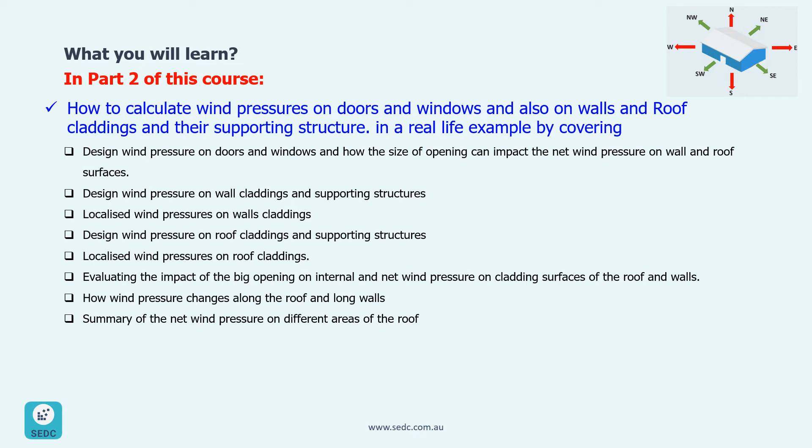In the second part of the course, you will learn about design wind pressure on doors and windows and how the size of opening can impact the net pressure on walls and roof surfaces. Design wind pressure on wall claddings and supporting structures and how to calculate localized wind pressures on wall claddings. Design wind pressure on roof claddings and supporting structures and how to calculate localized wind pressures on roof claddings. Evaluating the impact of big openings on internal and net wind pressure on cladding surfaces of the roof and walls. And finally, you'll see the summary of the net wind pressure on different areas of the roof.